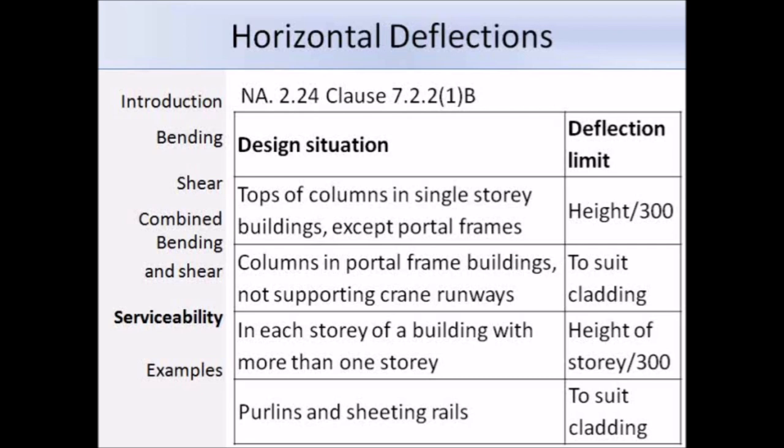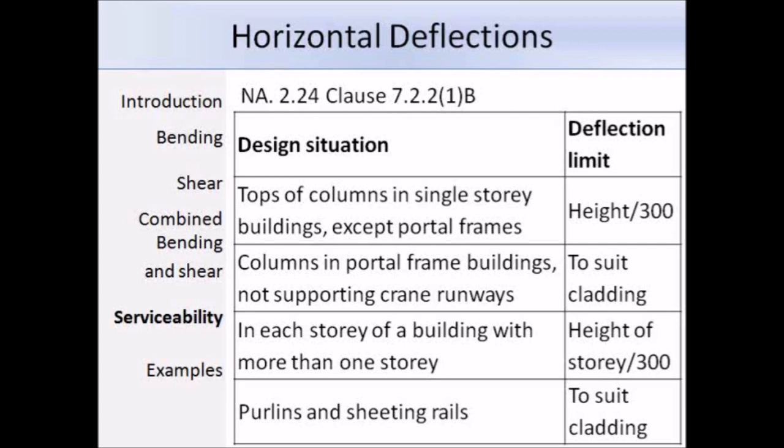Clause 7.2.2 states that the National Annex should be referred to when determining the maximum allowable horizontal deflection. The following table is taken from NA 224, Clause 7.2.2.1, Part 1-B. For the tops of columns in single-storey buildings, apart from portal frames, the deflection limit is the height over 300. For columns in portal frame buildings not supporting crane runways, the limit depends on the cladding. For each storey of a building with more than one storey, the limit is the height of the storey over 300. And for purlins and sheeting rails, similarly to the vertical deflection limit, the horizontal deflection depends on the cladding.